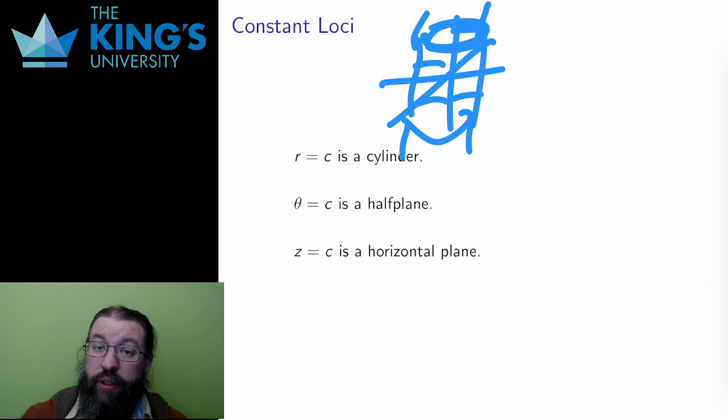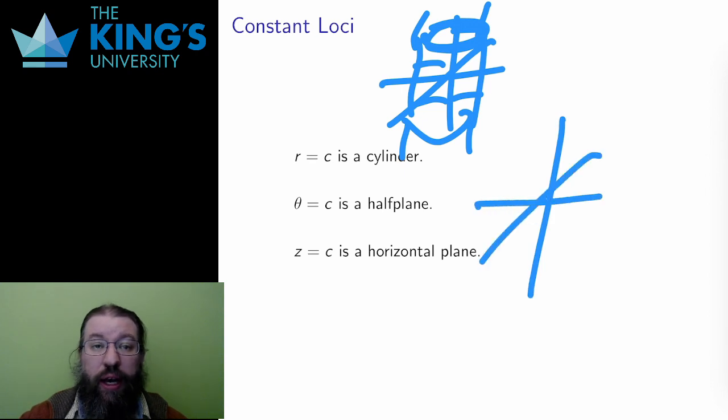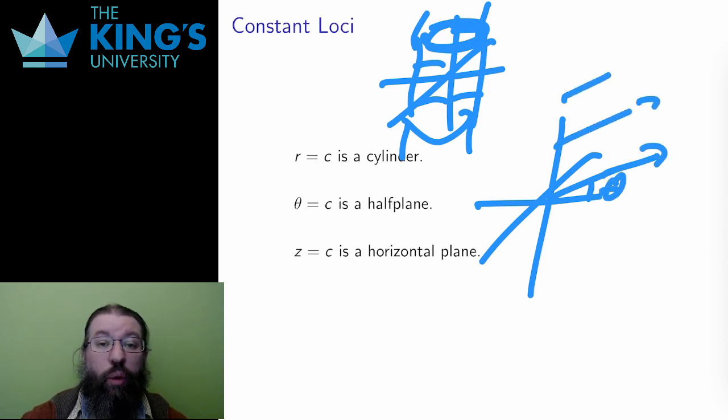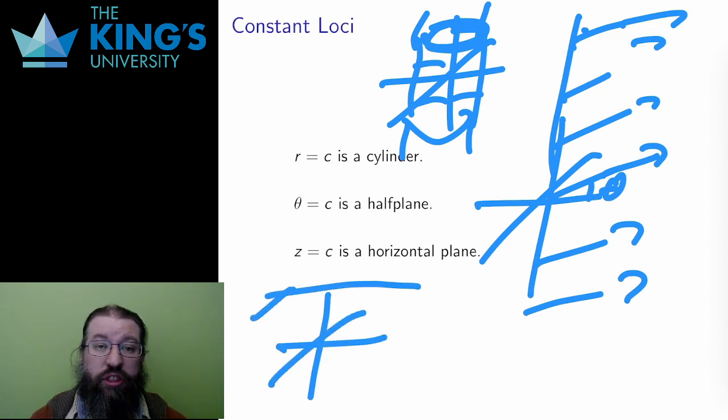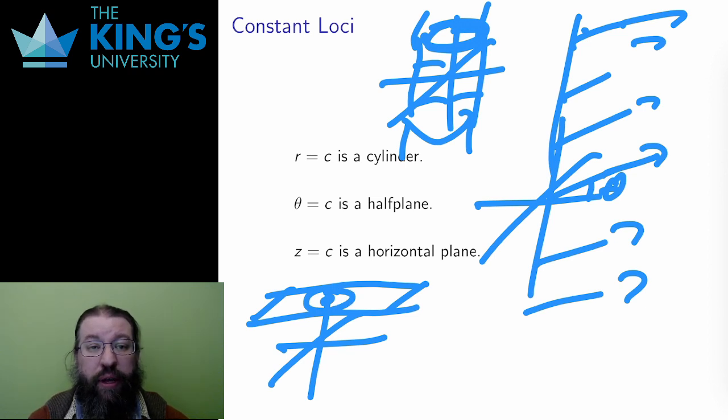When the angle is constant in polar coordinates, I got a ray from the origin outwards. Now that height is also included, I get a half plane above this ray, going out from all points on the z-axis. Finally, when z is constant, then I have constant height. The radius and angle can change, which means that I can have any distance out from the z-axis, and angle position anywhere around the circle. And the result is the entire plane z equals c, a horizontal plane at height c.